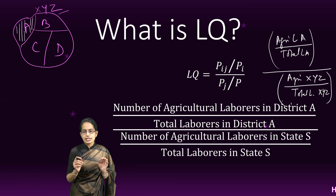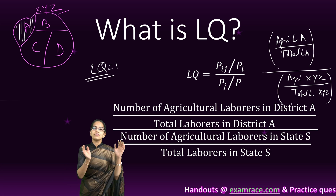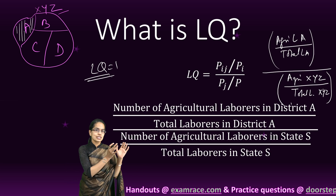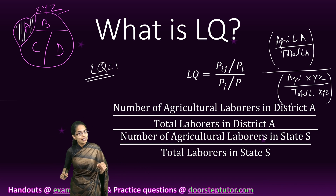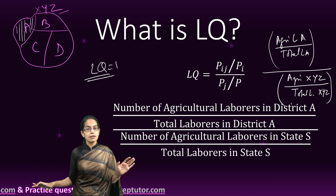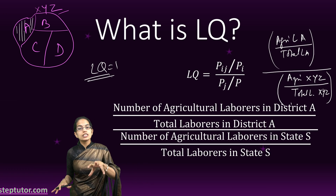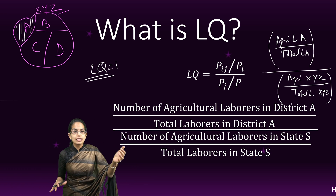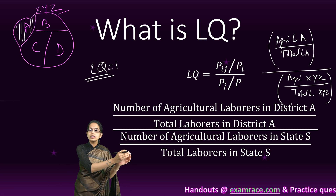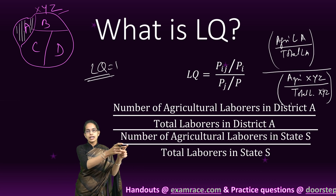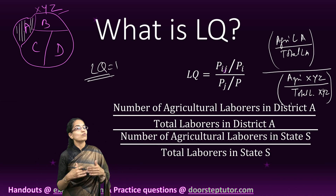If the location coefficient is 1, it means the proportion of agricultural laborers in district A and the proportion of agricultural laborers in the state are the same — and it explains equal concentration. If the location coefficient is more than 1, the agricultural laborers are more concentrated in district A compared to the state. If the ratio is less than 1, it implies less concentration in district A.